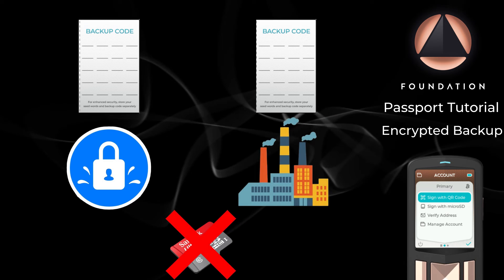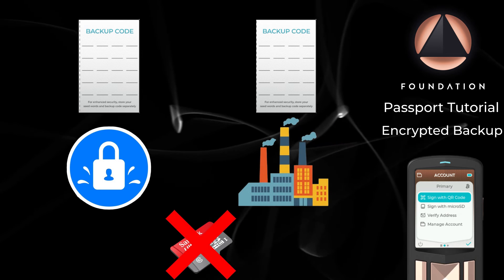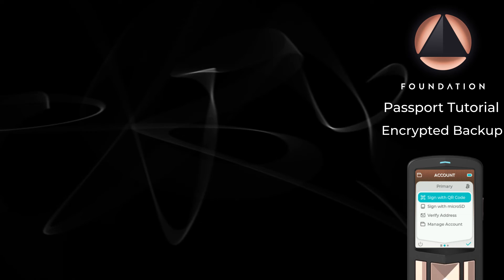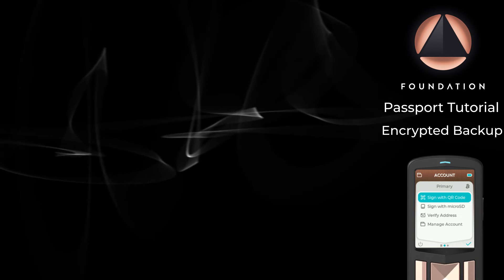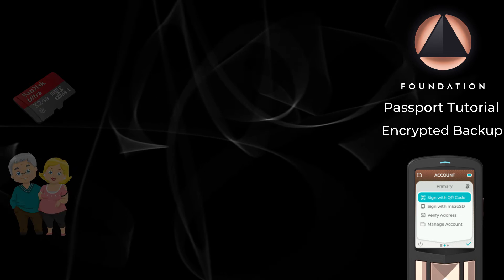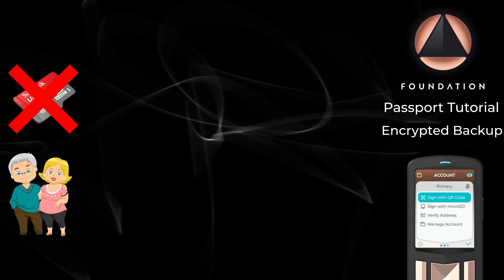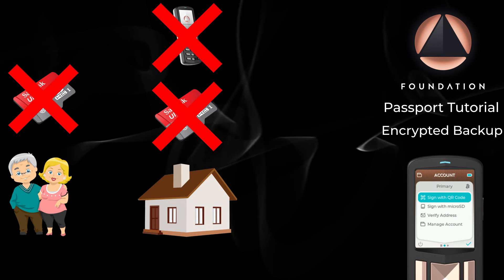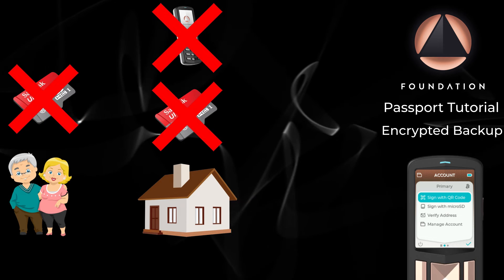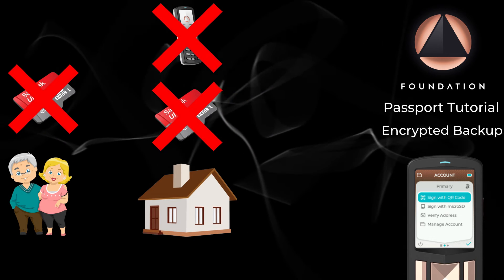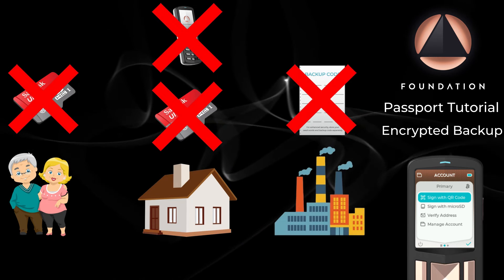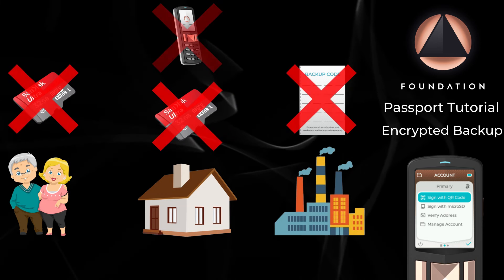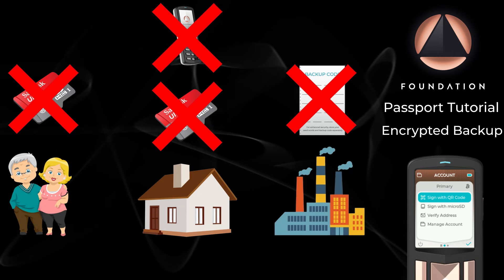This scenario is of course only an example and your own storage location should be carefully considered based upon your own situation. Using this scenario, let's demonstrate the extra redundancy gained from leveraging encrypted backups. Your parents' house could flood, destroying the micro SD card they're holding for you. Your house could catch fire, destroying both your Passport and the micro SD card in your safe. And a colleague could steal your work notebook which has a copy of your 20-digit backup code. All of these disaster scenarios could happen at exactly the same time and you'd still be able to recover your Bitcoin.